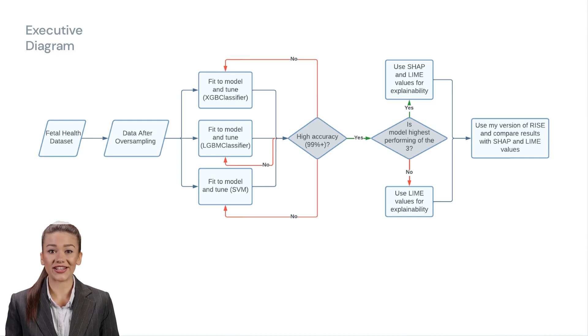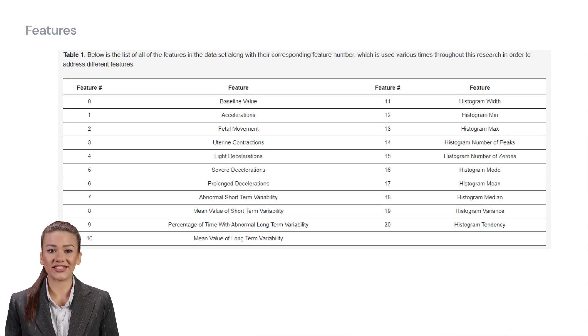These features measured many trends in fetal heart rate such as variations, accelerations and decelerations, and histogram values of the heart rates. Along with that, uterine contractions in the mother and movements by the fetus were also measured and recorded. This table shows the name of these features. For more details, please read our paper.